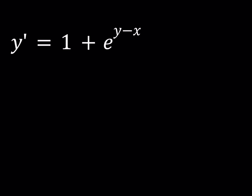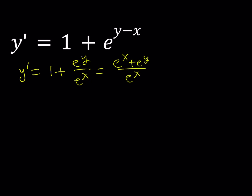This problem is not separable because x and y obviously cannot be separated. For example, if you tried the following: you can write this as 1 plus e to the power y divided by e to the power x. And then making a common denominator, you can write it like e to the power x plus e to the power y over e to the power x. Then cross multiply and write y prime as dy over dx. But unfortunately, this is not going to be a separable equation if you follow this path.